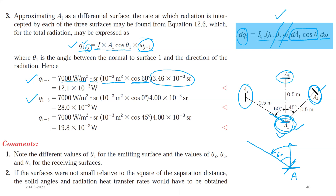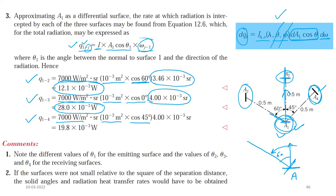For q(1→3): both a1 and a3 are perpendicular to the emission direction, so θ1 = 0°. q(1→3) = 7000 × 10⁻³ × cos0° × 0.4 × 10⁻³ = 2.8 × 10⁻³ W. For q(1→4): a1 makes 45° toward a4, so q(1→4) = 7000 × 10⁻³ × cos45° × 0.4 × 10⁻³ = 19.8 × 10⁻³ W.